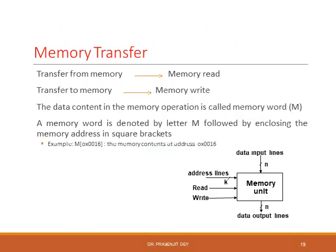Now we will discuss memory transfer. In memory, two kinds of operations may happen: memory read and memory write. Memory read is when we transfer data content from memory, and memory write is when we transfer data content into a memory location. The data content in a memory operation is called the memory word. A memory word is noted by capital letter M followed by a square bracket containing the memory location. For example, M within bracket 0x0016 is the memory content at address 0x0010, where 0x represents hexadecimal notation.